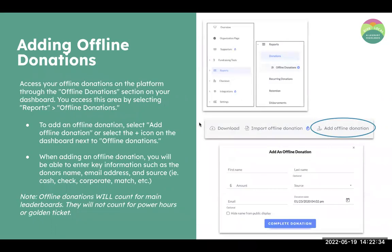Offline donations count towards your main leaderboards. Any gifts made via cash or check during the entire giving period — May 24th to June 7th — count toward your organization's giving day total, provided you enter those gifts into your profile by the seventh. To add an offline donation, select 'Add Offline Donation' in the upper right corner of the page or select the plus icon. In that section, you can label the source, the date, and hide the name from the display — there are a lot of useful tools in there.